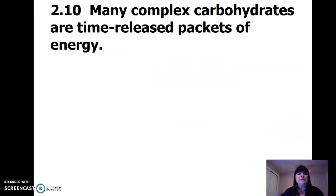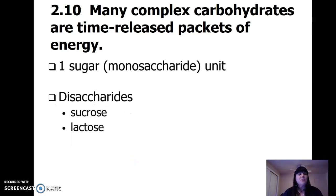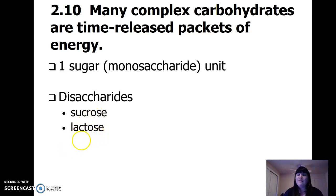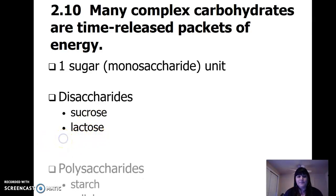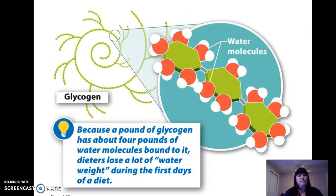Complex carbohydrates are time-release packages of energy. One sugar is a monosaccharide. Put two sugar molecules together and it's a disaccharide — di means two. Sucrose is common table sugar that you add to your coffee — it's a disaccharide. Lactose is found in milk — also a disaccharide. Polysaccharides — poly means many — so that huge glycogen molecule is a polysaccharide.